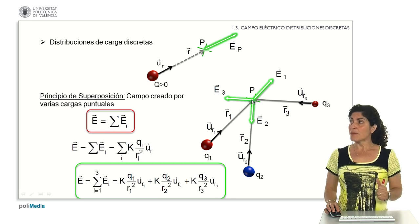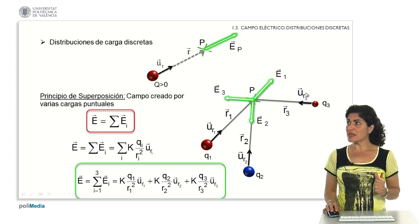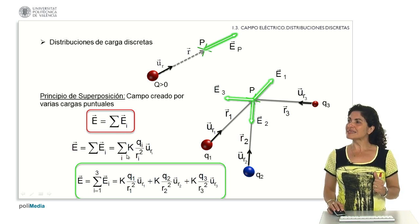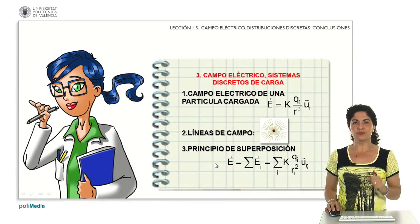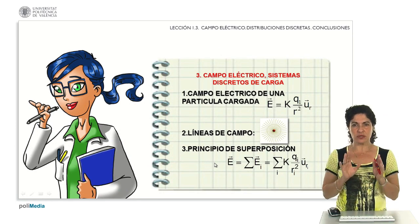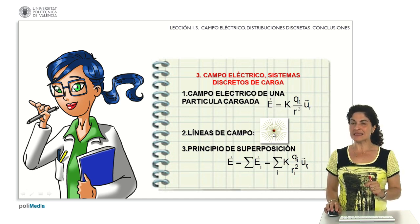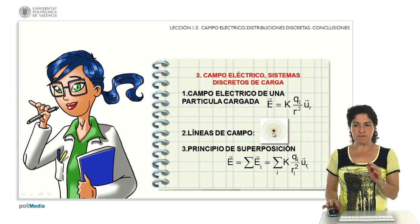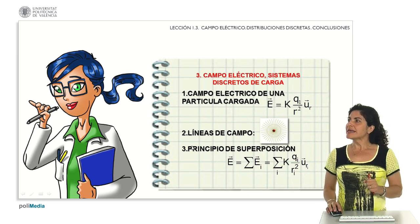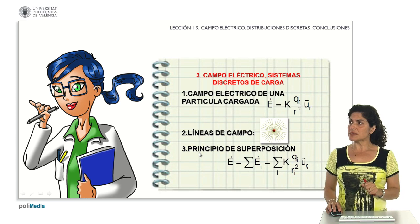We calculate the field generated by each charge individually and add them vectorially at the point of study. This gives an algebraic representation which, developed for this particular example, produces a specific expression. In summary: we use the algebraic expression for a single charge, field lines define the change in properties of the space surrounding charged particles, and for a discrete system of charged particles we apply the superposition principle. Thank you very much.